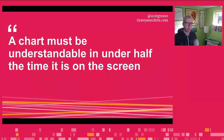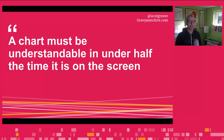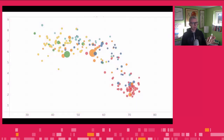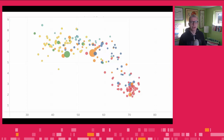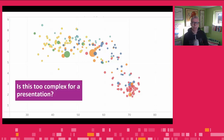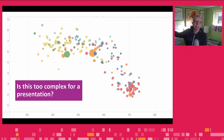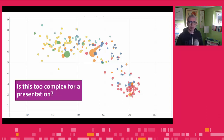I just want to finish with one more point: a chart must be understandable in under half the time it is on the screen. Always bear this in mind. Consider this scatter plot — I'm going to show it for five seconds. Is that too complex for a presentation? Well, it's not. What I see a lot of people do is show a complex chart that they've put into a dashboard and then assume that the audience have a clue what it's talking about. Well, they don't.